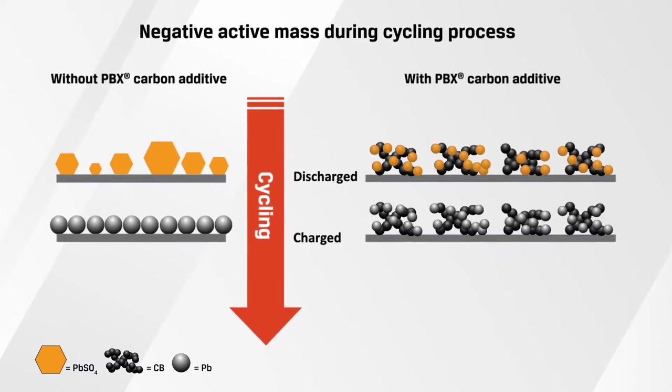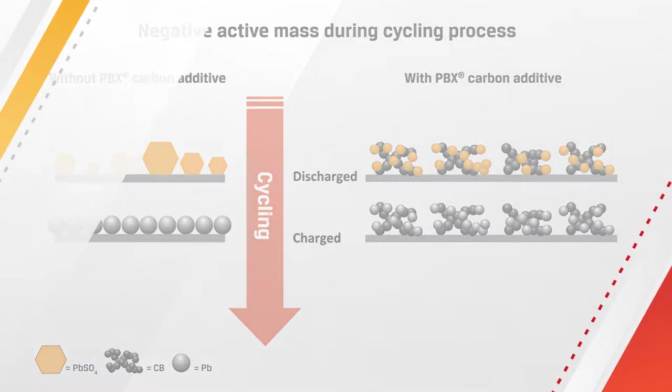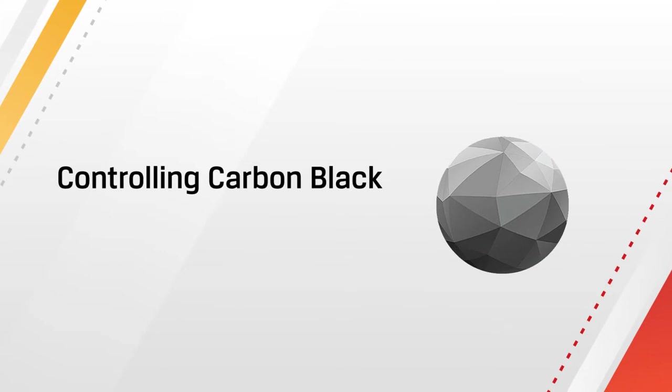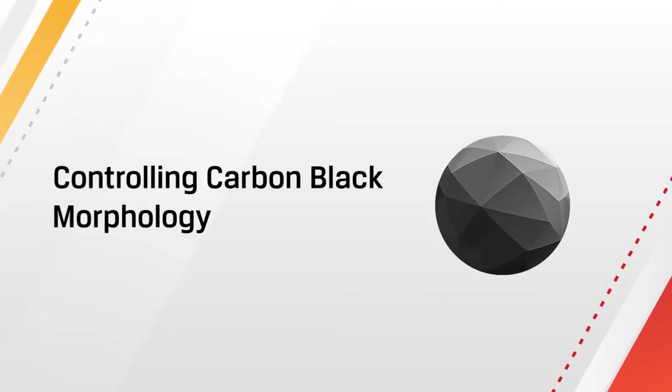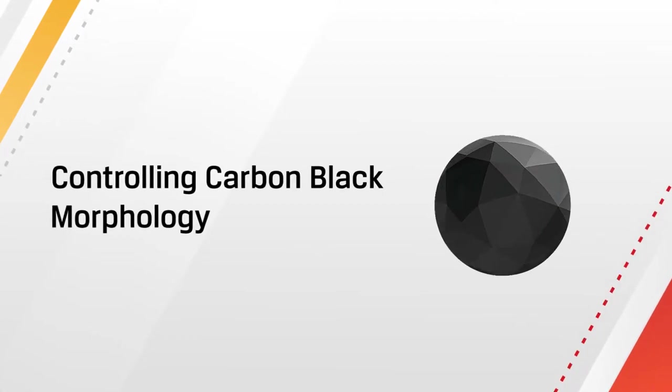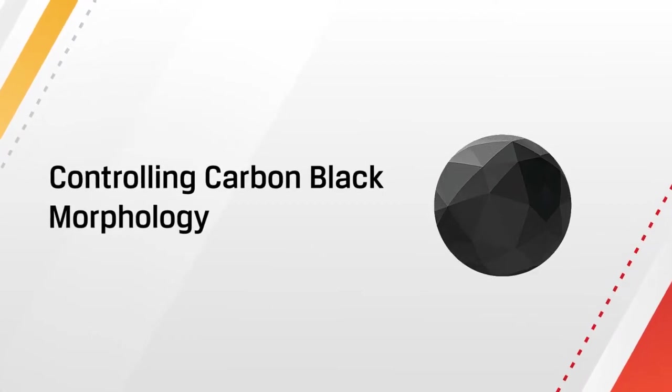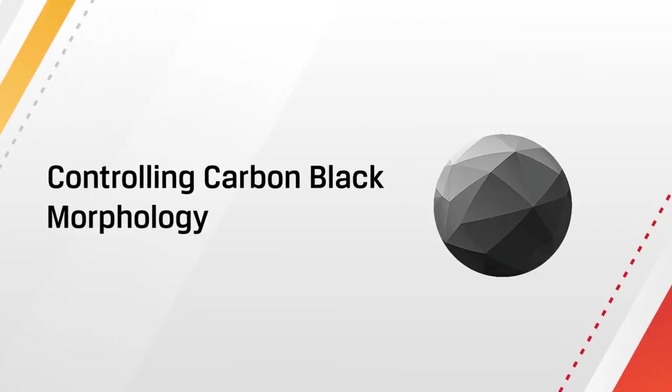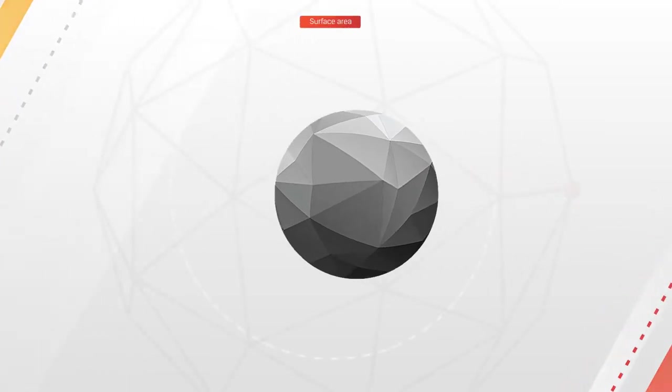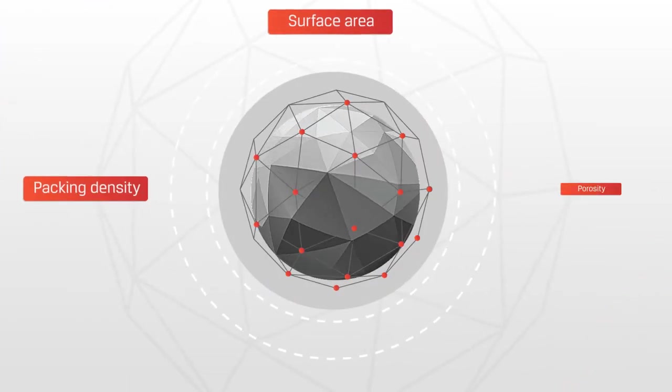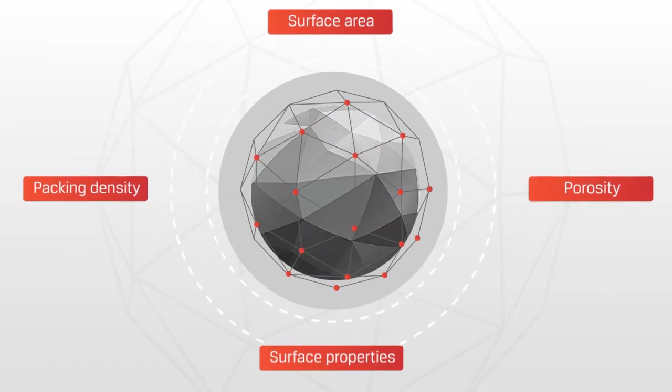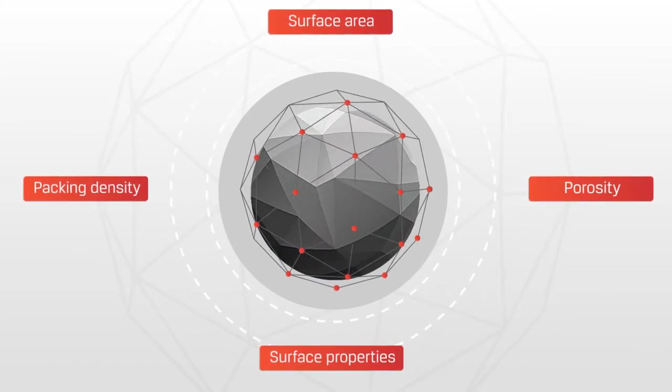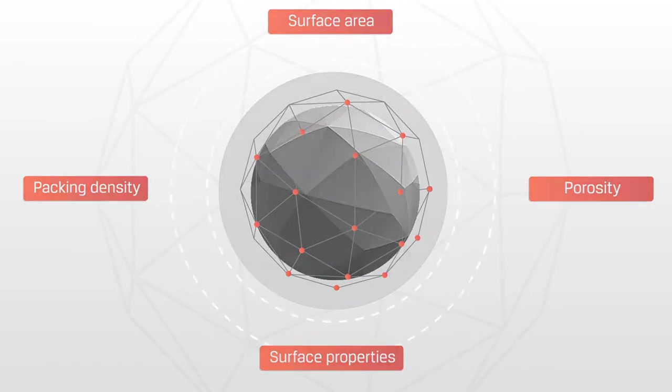There are several dimensions of the carbon black structure that can be controlled by Cabot's manufacturing process. This tight control results in reproducible, specifically engineered particles and dependable high performance results. Surface area, packing density, porosity, and surface properties are all elements that Cabot can exert specific control over when formulating our carbon blacks.